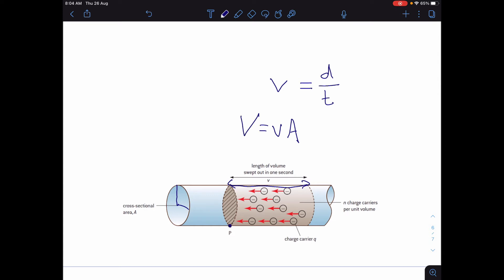The total amount of charge per unit volume of the material is the number of charge carriers per unit volume, N, times the charge on each one of those, which is Q. And for an electron, that's minus 1.6 times 10 to the minus 19.